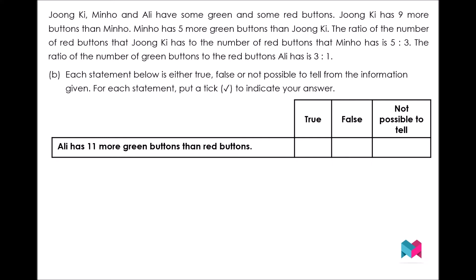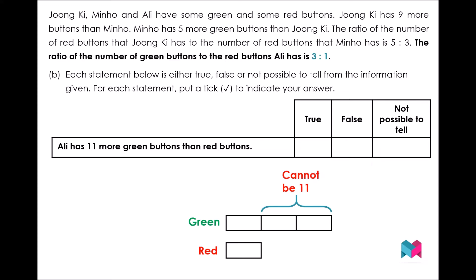First, let's evaluate the statement that Ali has 11 more green buttons than red buttons. Since the ratio of green buttons Ali has to red buttons is 3 to 1, the difference between green and red buttons is represented by 2 units. This means that Ali cannot have 11 more green buttons than red buttons, as an odd number like 11 cannot be divided by 2 units and still remain a whole number.